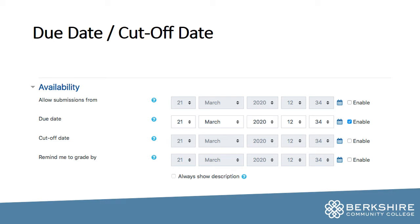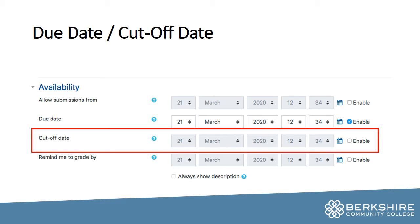If you don't want them to submit late at all, you can consider having a cutoff date. I always call the cutoff date the secret due date. If you enable a cutoff date it means that after that point students will not be able to submit to this assignment at all. I usually don't recommend doing this, but you could have a good reason to want to use that setting.